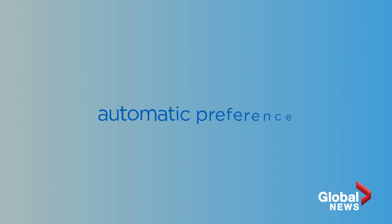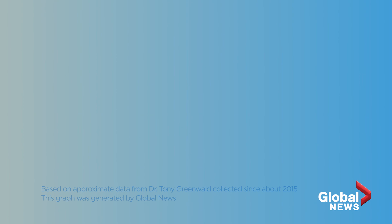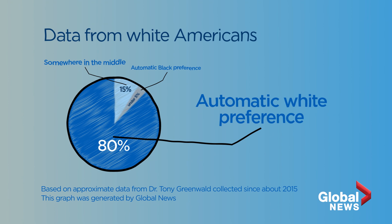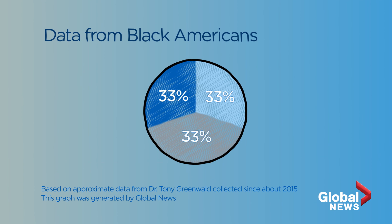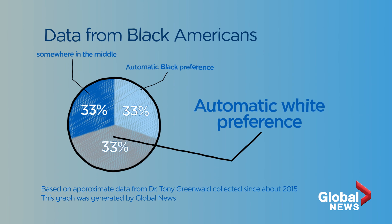In the end, it shows you what Dr. Greenwald calls an automatic preference toward white people or black people or somewhere in between. On average, about 80% of white Americans who took this test showed an automatic white preference. What Dr. Greenwald finds really interesting is that about a third of black Americans also have an automatic white preference, another third have an automatic black preference, and the rest are somewhere in the middle.